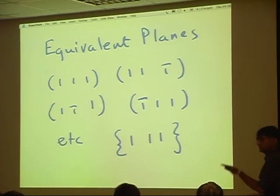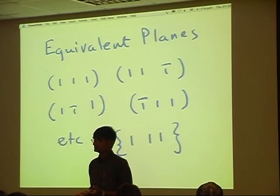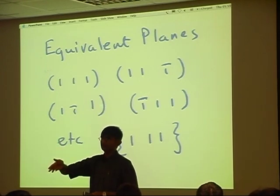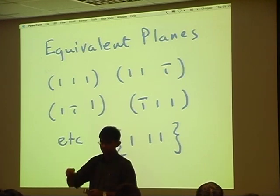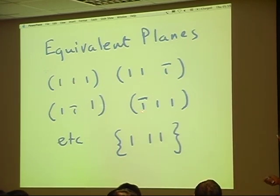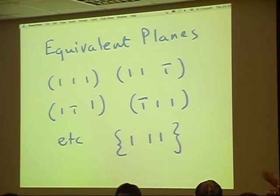Just like we had crystallographically equivalent directions, we also have crystallographically equivalent planes — for example, all the faces of a cube are exactly identical. The indices you use for each plane depend on the choice of coordinate system. So the (1,1,1) plane has the same arrangement of lattice points as (1,1,̄1), (̄1,1,1), and so on. To indicate a crystallographically equivalent set of planes, we use braces — whenever I use braces, that means I'm referring to planes of that form.